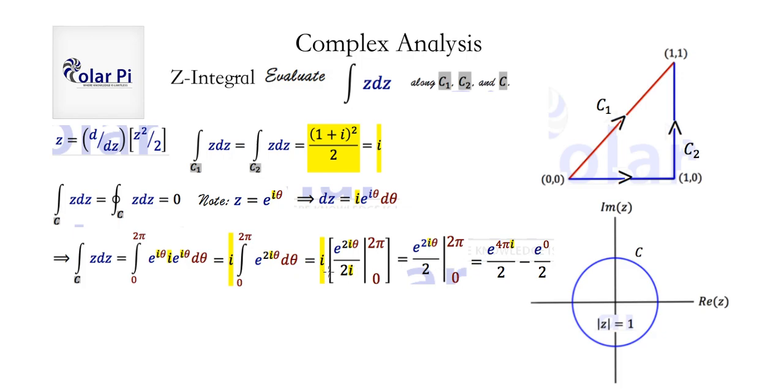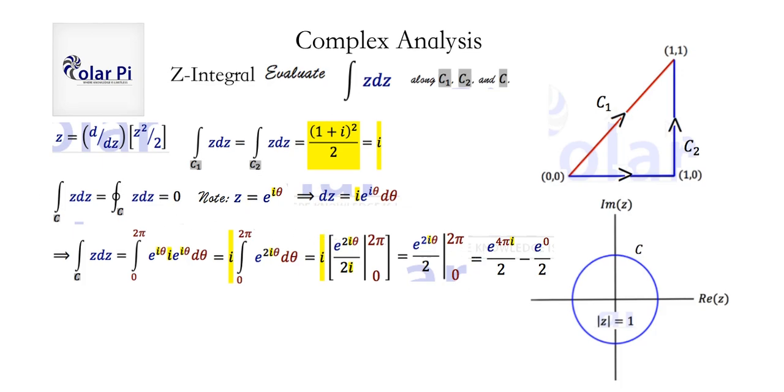But yeah, using that interpretation, the fact that e to the i theta is equal to cosine theta plus i times sine theta. We could write, first I just simplified e to the 0 as just being 1 as it is and use the common denominator too. But yeah, we could interpret this from that Euler identity as cosine 4 pi plus i times sine 4 pi, and that's e to the 4 pi i or e to the i times 4 pi.